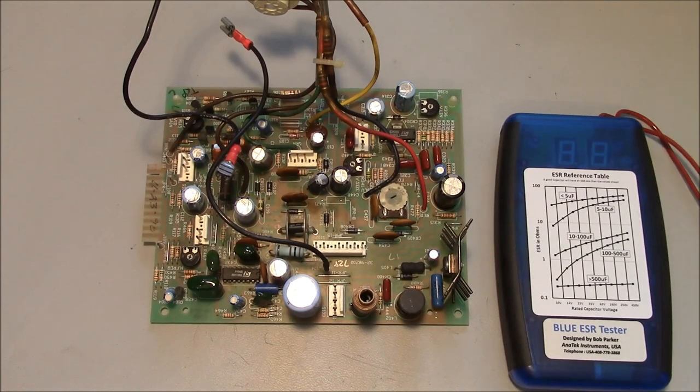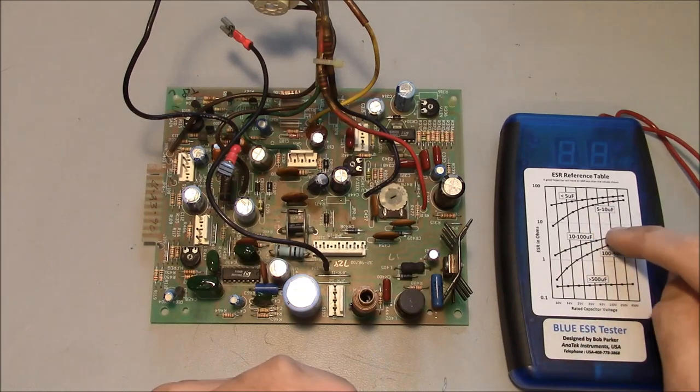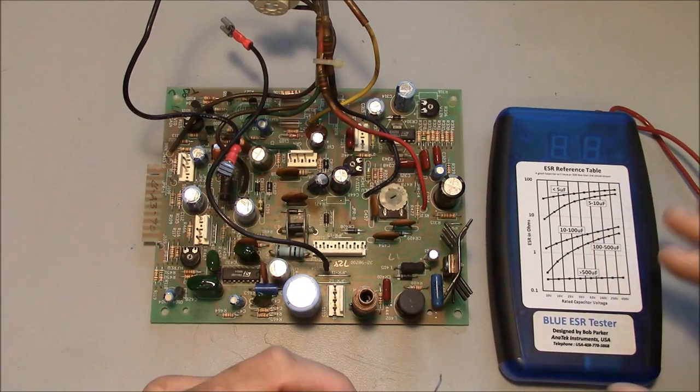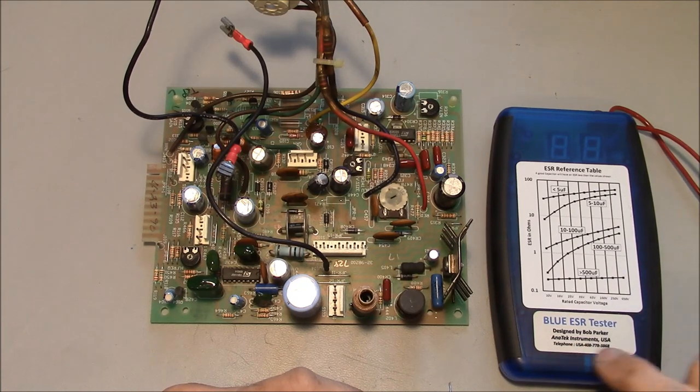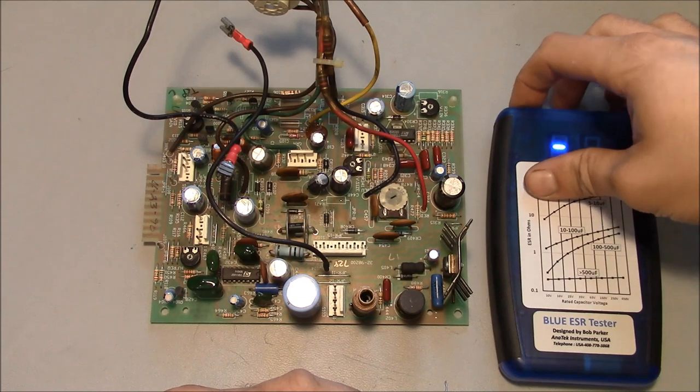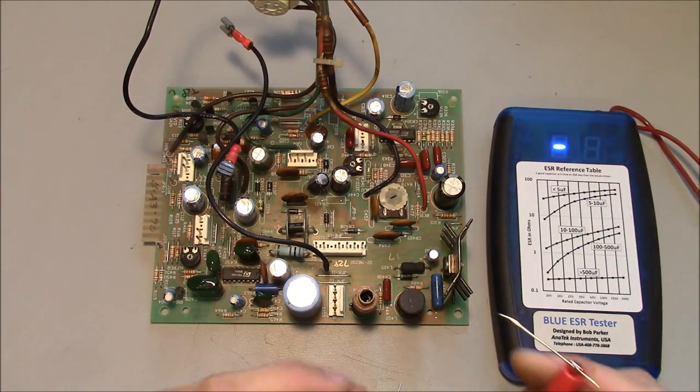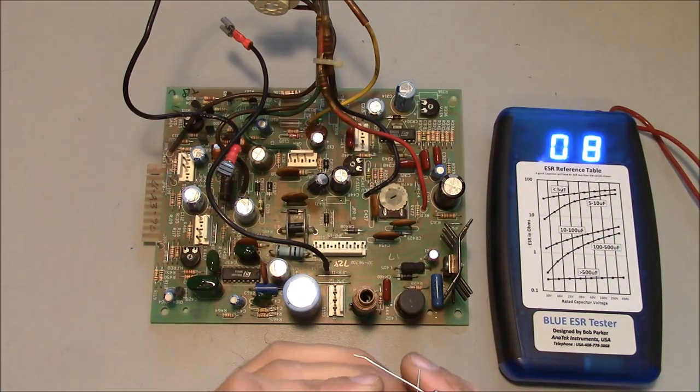Alright let me show you just quickly how I determined that these capacitors were bad. So this is an ESR tester equivalent series resistance and it's sold by Anatec Instruments. I actually bought it as a kit and assembled it myself. It costs about $85 and it seems to work really well.